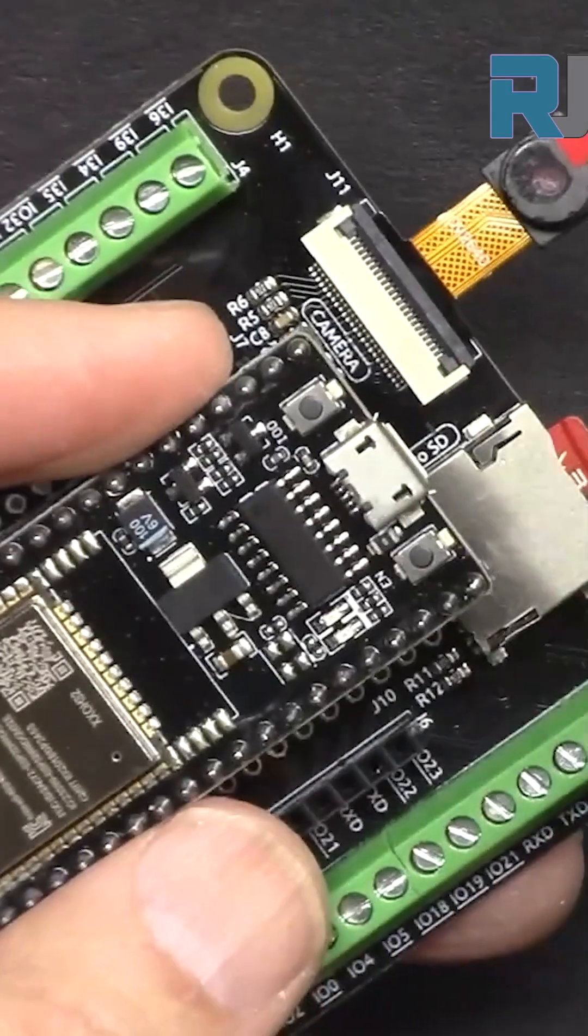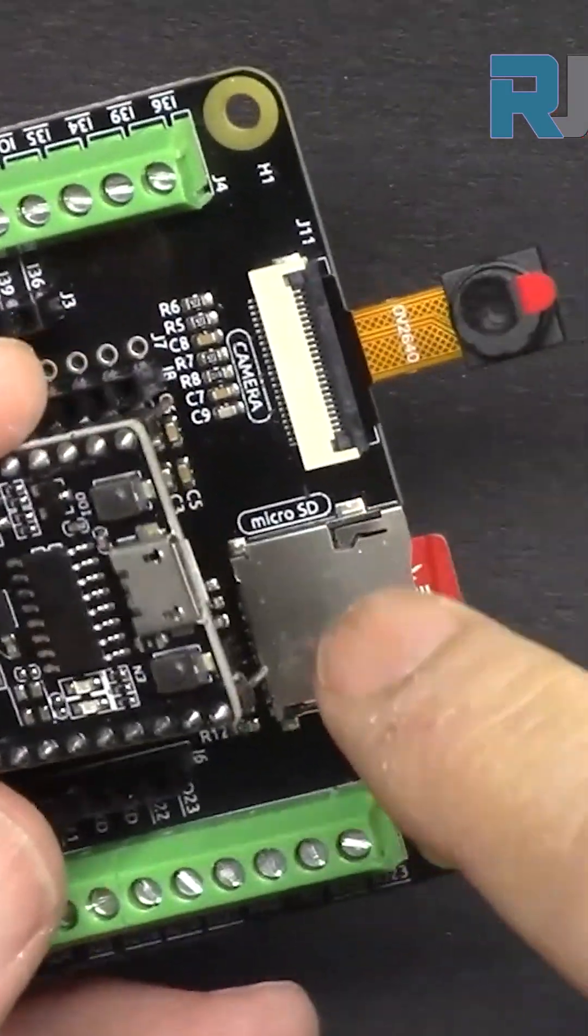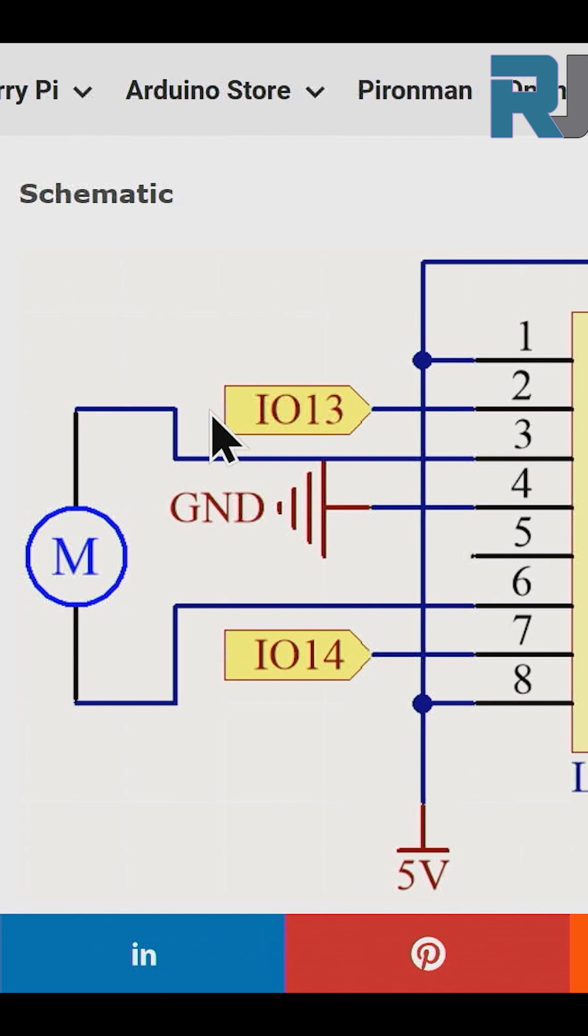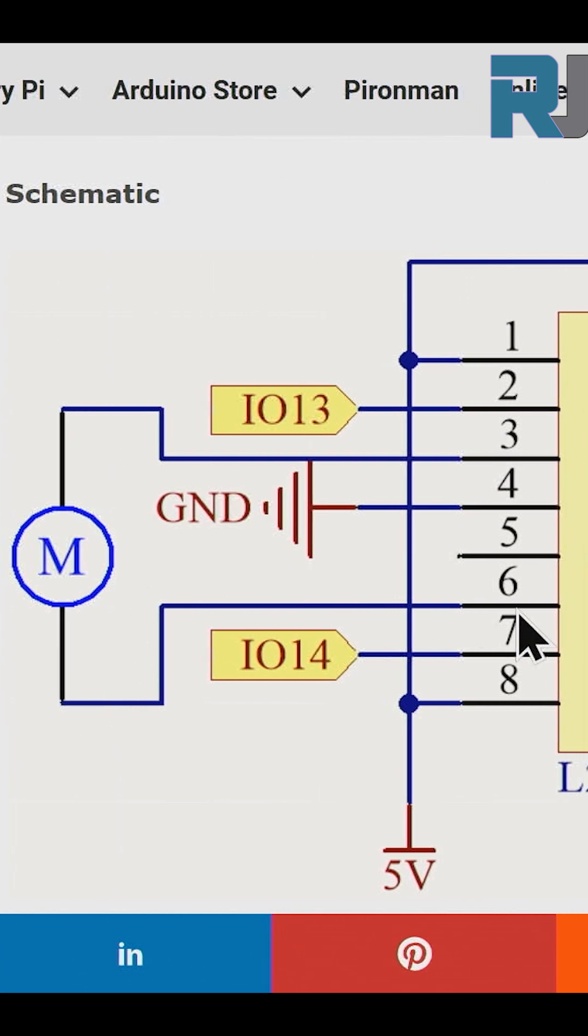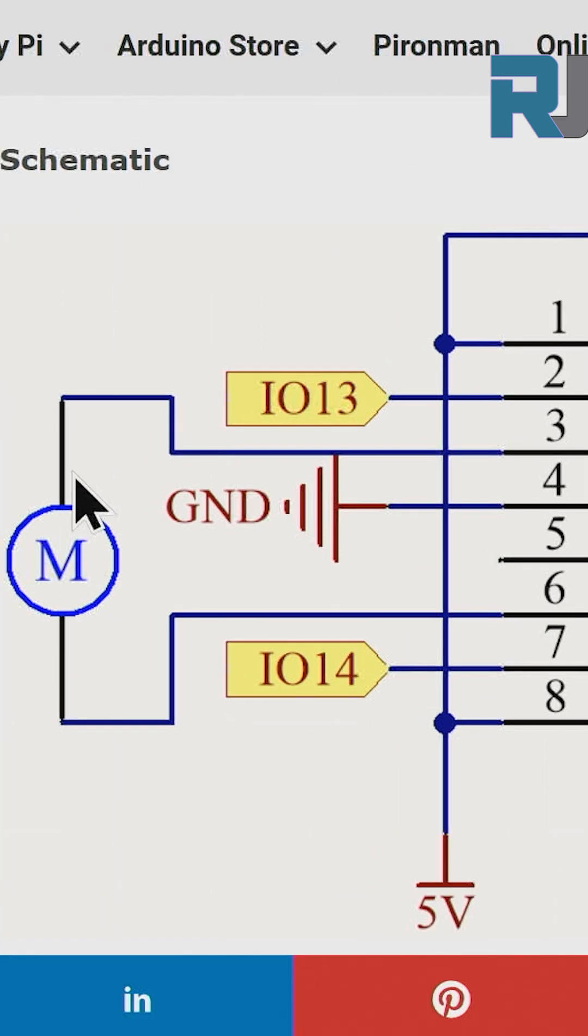To make wiring easy, I use the SunFounder's extension board. Here is the wiring diagram. The motor is connected to pin 3 and pin 6 of L293D. Pin 2 and 7 are connected to GPIO-13 and GPIO-14 of ESP32, respectively.